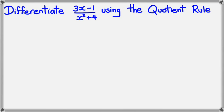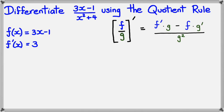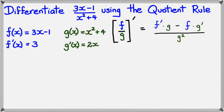We have a question: differentiate 3x minus 1 divided by x squared plus 4 using the quotient rule. Our f of x equals 3x minus 1, so f-dash of x equals 3. Our g of x equals x squared plus 4, so g-dash of x equals 2x. Now we substitute these four elements into the quotient rule formula.